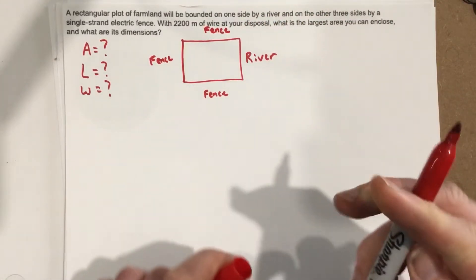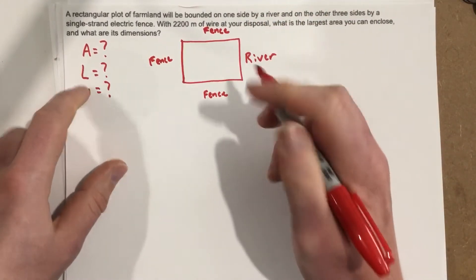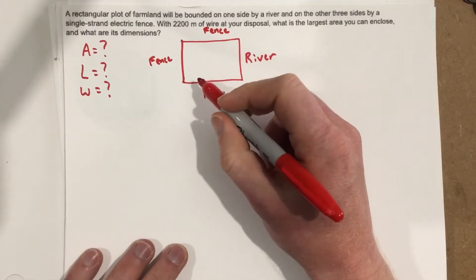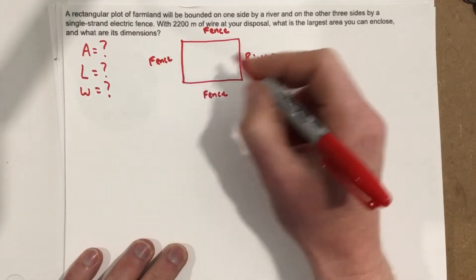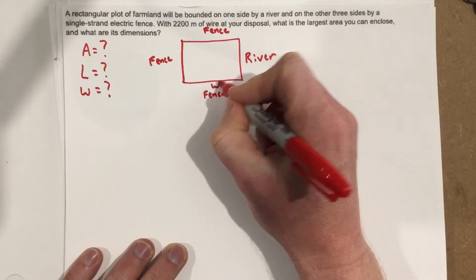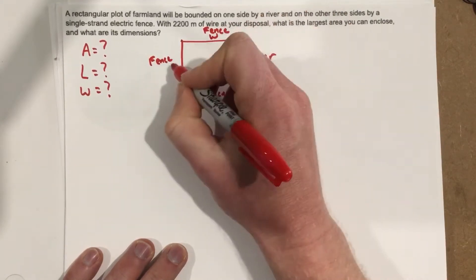Now obviously they're asking us for the length and the width, so let's go ahead and label those. We're going to label this is the width, this is the width, this is the length.